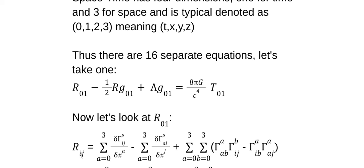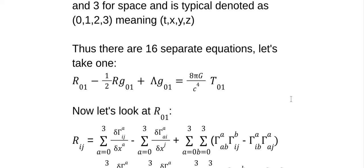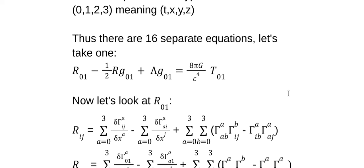Here is the way it looks in the generalized coordinates. So, the R sub IJ, 01, and then we have to sum these partial derivatives of these things called the Christoffel symbols with respect to different coordinates, and then we have to sum the products of the Christoffel symbols. But, let's just start and run this backwards.